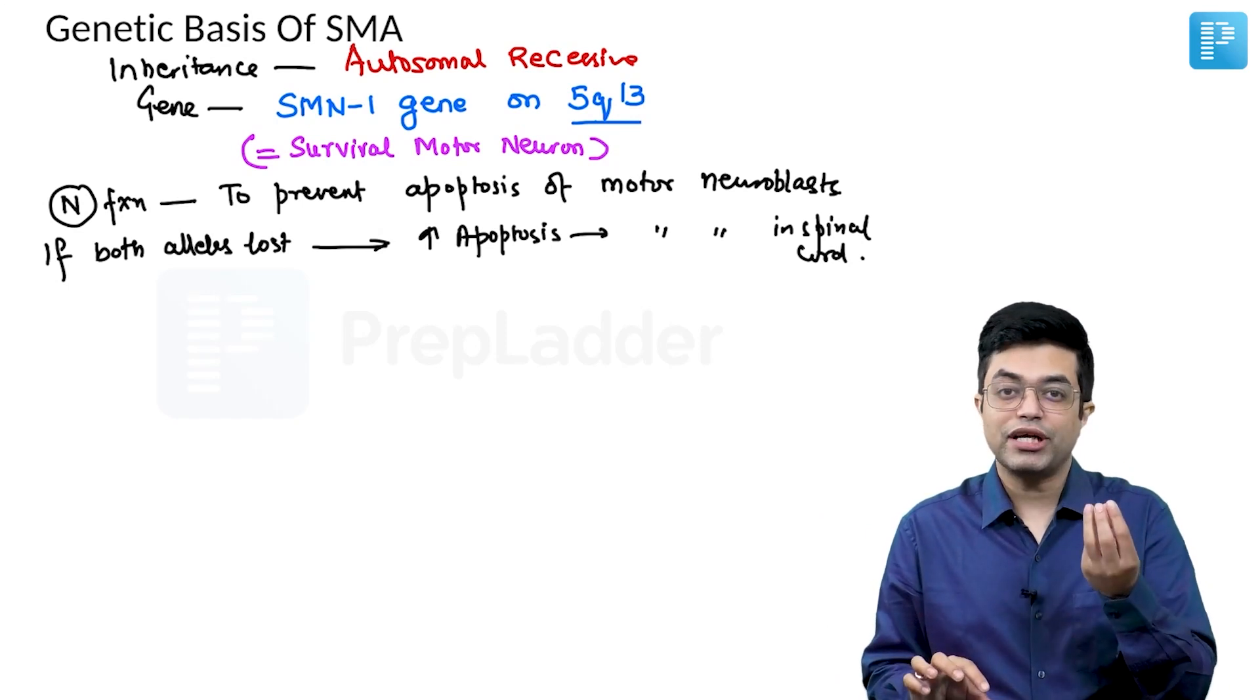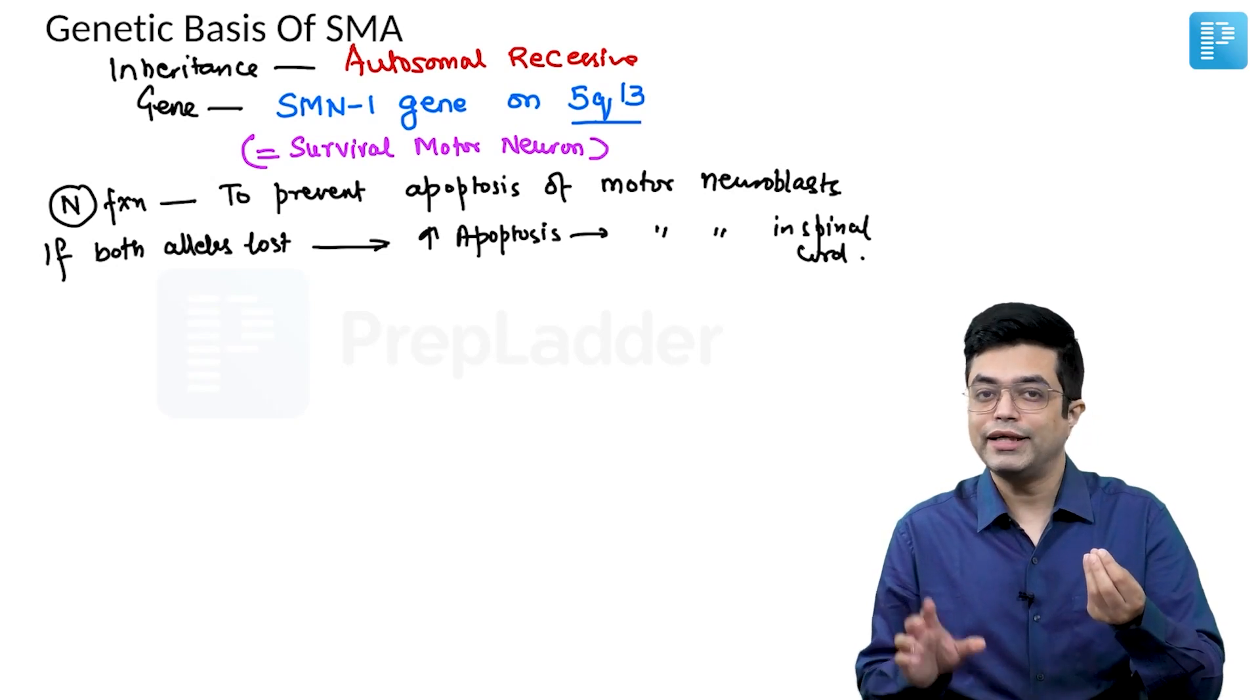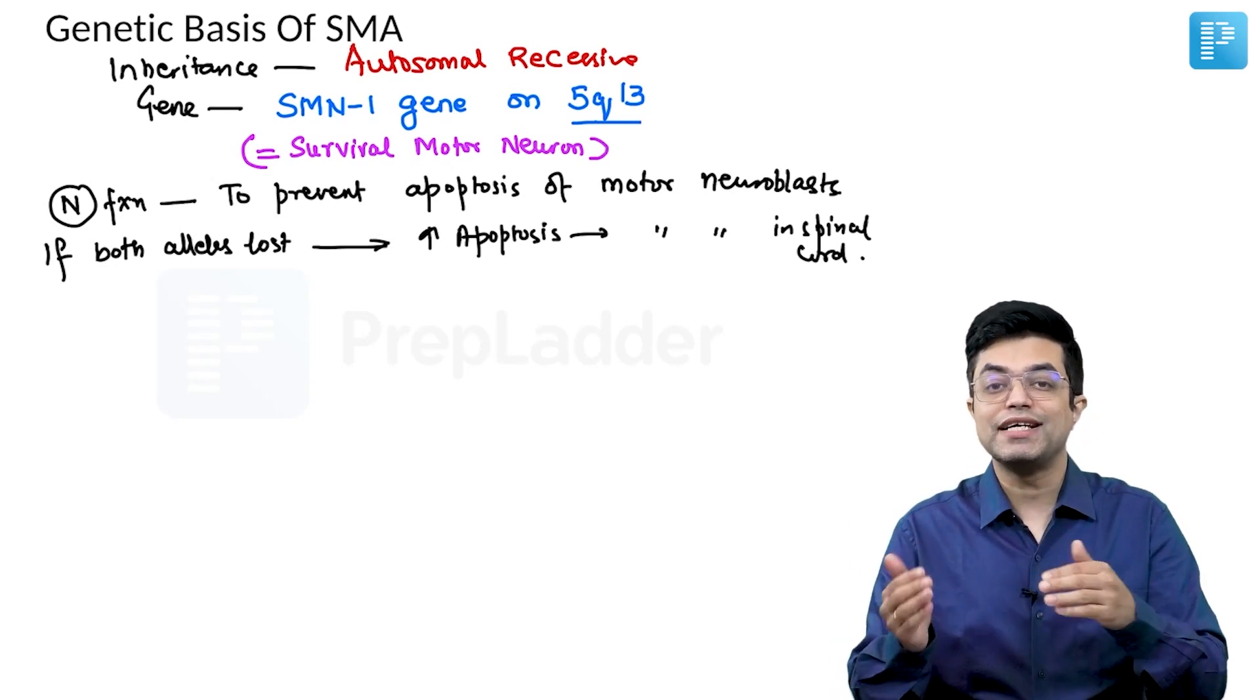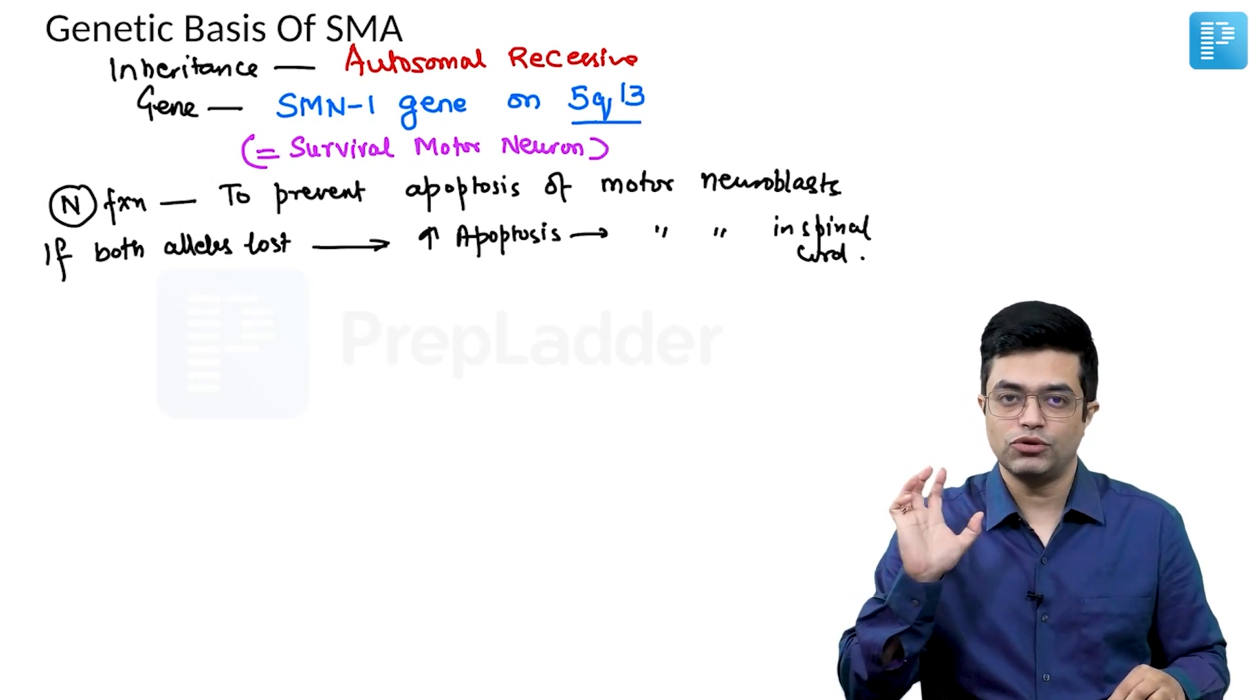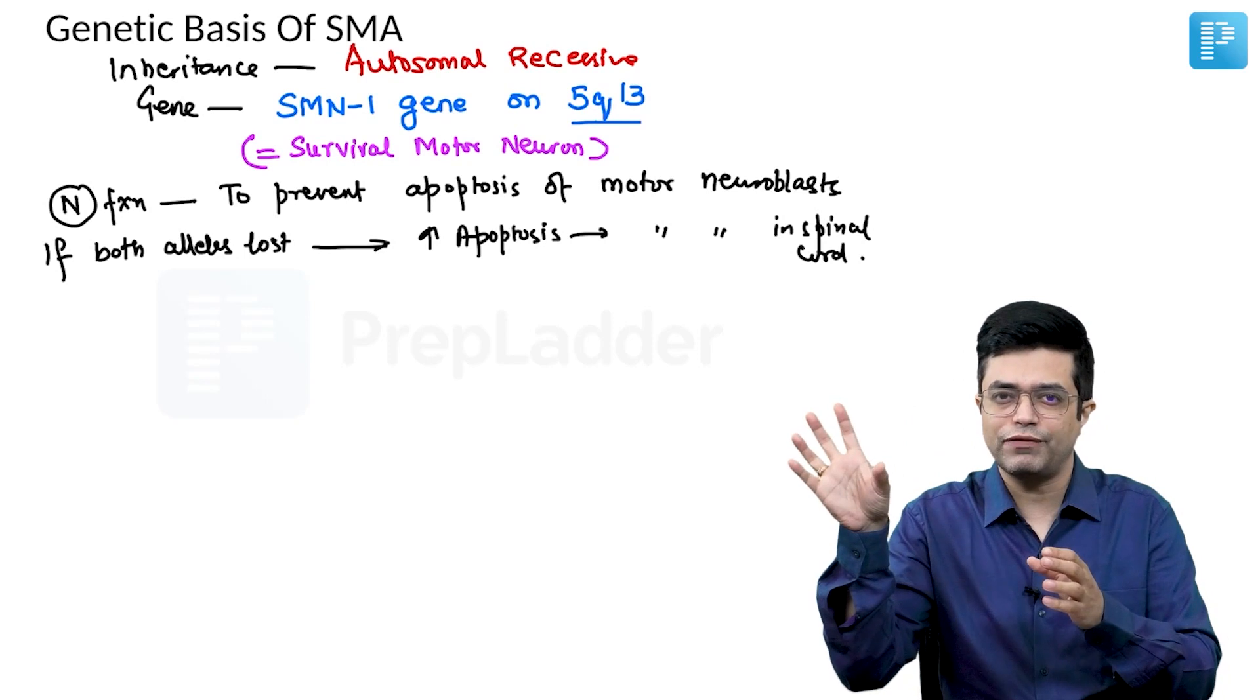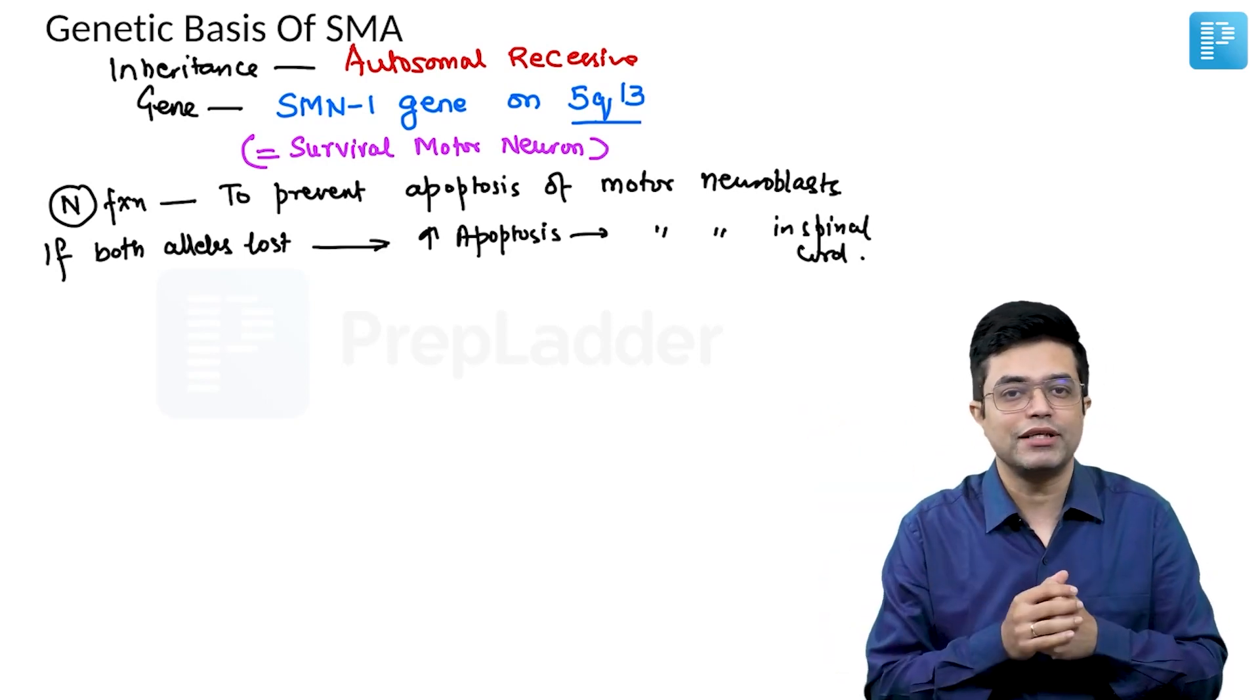The neuroblasts which are actually going to form the anterior horn cells of spinal cord, they do not undergo apoptosis. Their apoptosis is prevented by the product of SMN1 gene. It does not allow that process of apoptosis to be extended to the actual cells which are going to form cells of the spinal cord.